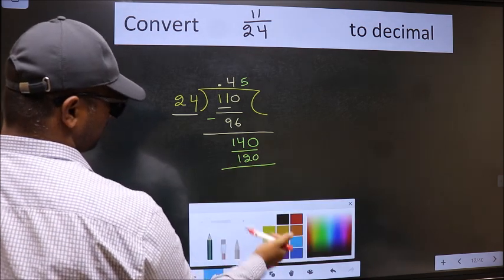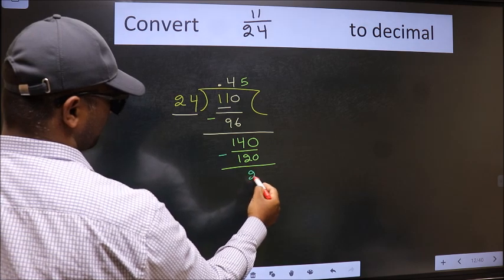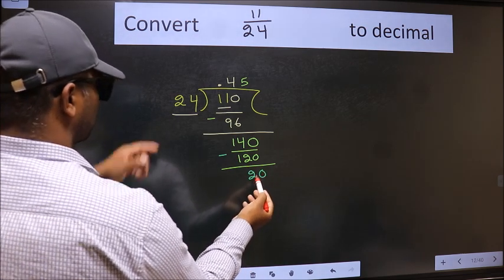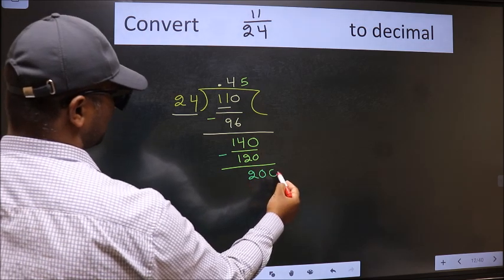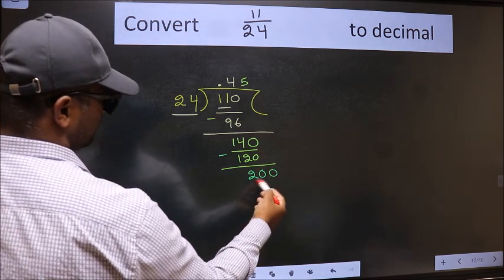Now we should subtract. We get 20. 20 is smaller than 24 and we already have the decimal, so directly take 0. So 200.